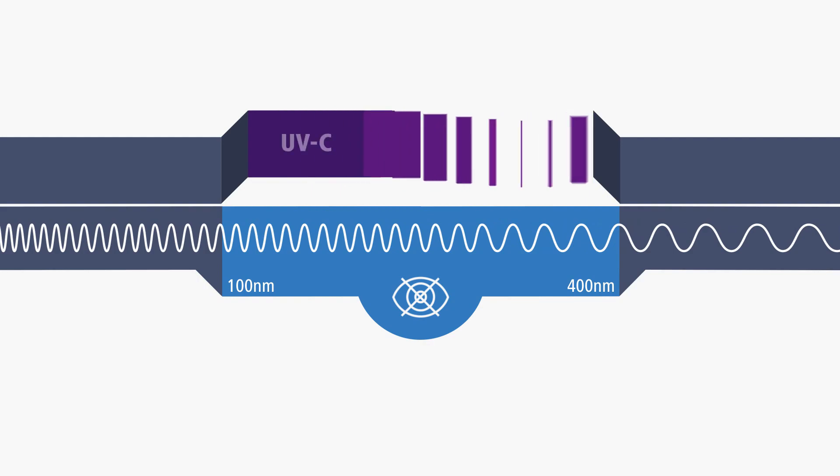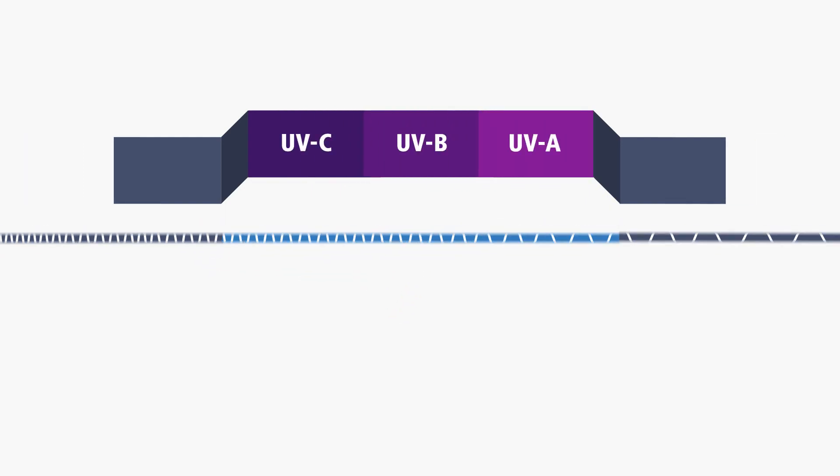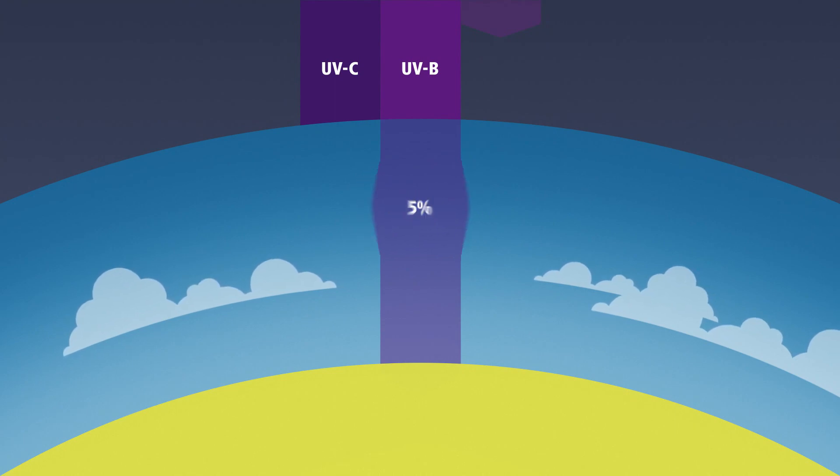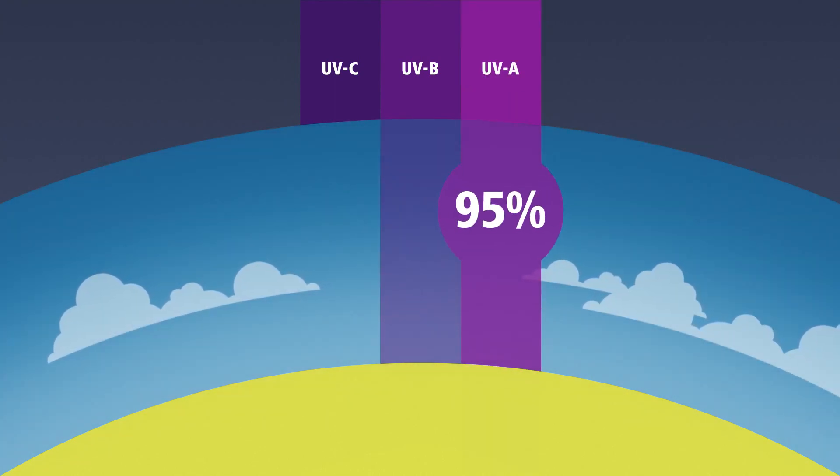UV radiation is classified by wavelength into three categories. UV-C radiation gets trapped in the ozone layer of the atmosphere. But 5% of UV-B radiation can get through. And up to 95% of UV-A radiation can get through without anything stopping it. That means UV radiation is always there.